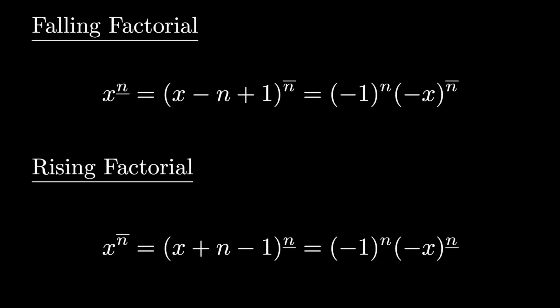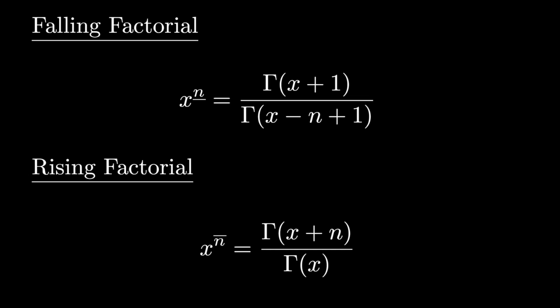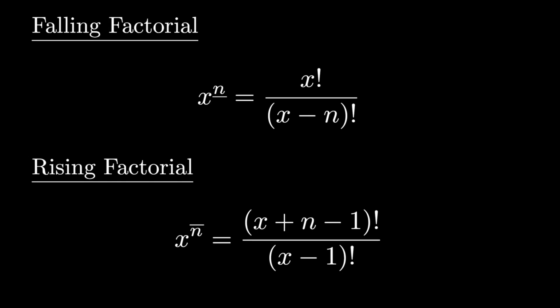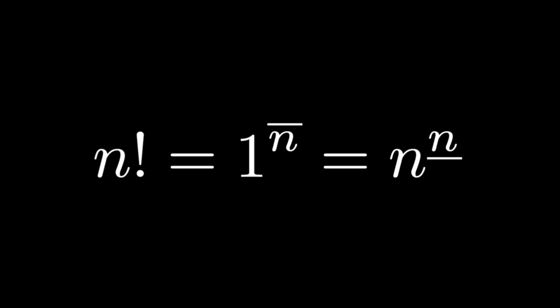The falling factorial can be written in terms of the rising factorial and vice versa. Each can also be defined using the gamma function, as well as regular factorials. In turn, the regular factorial can be written in terms of rising and falling factorials.